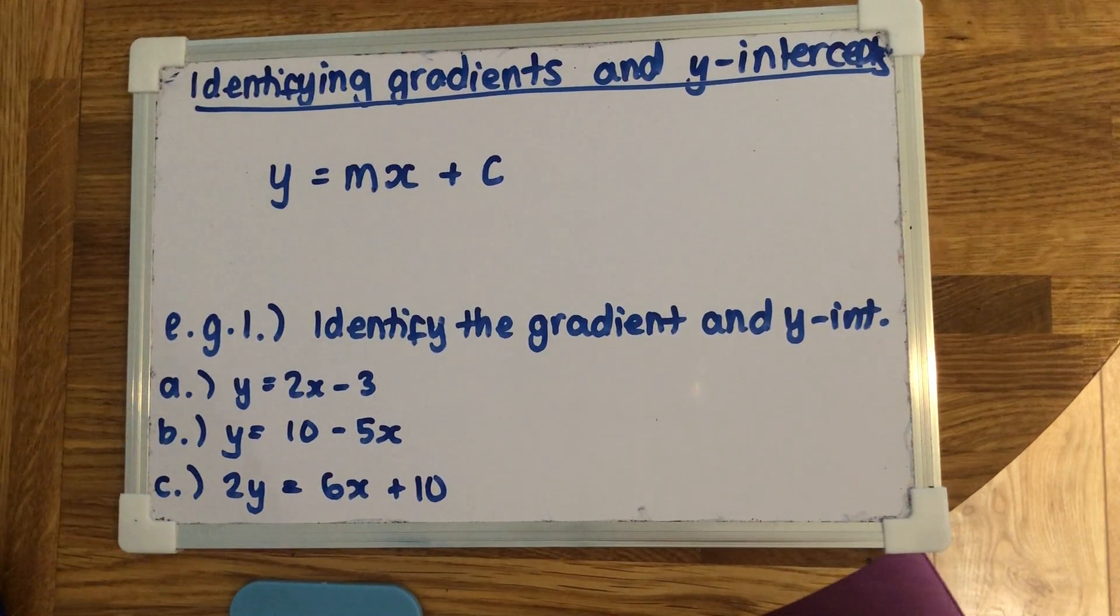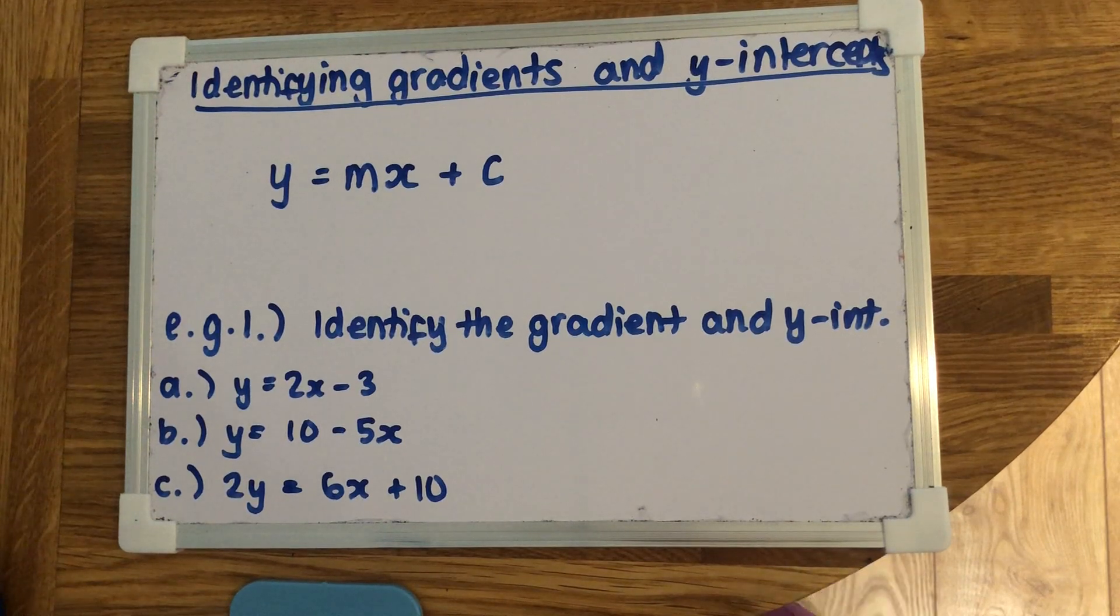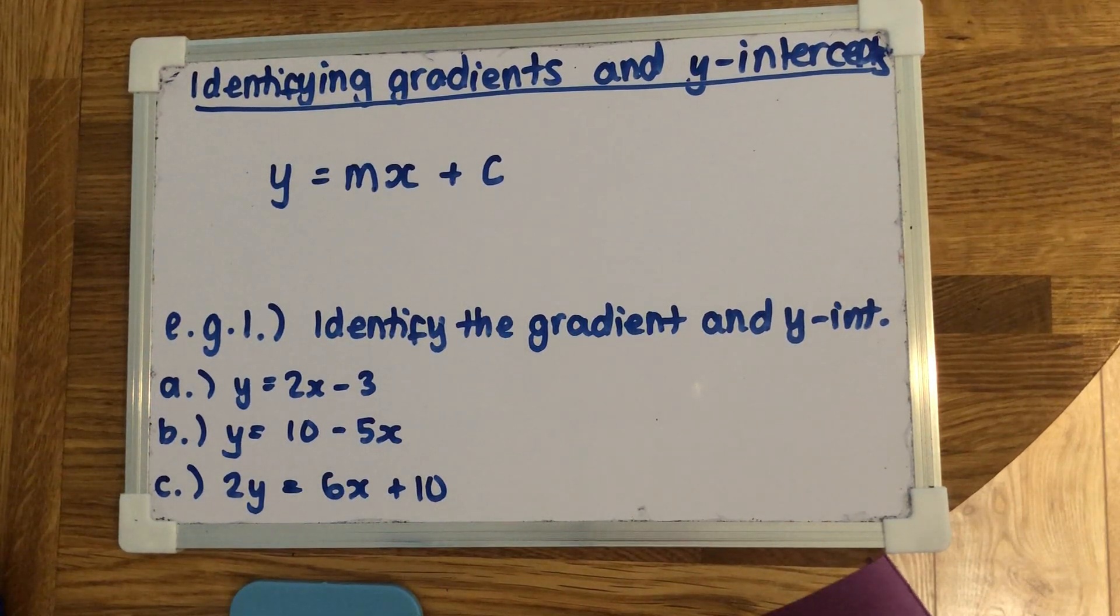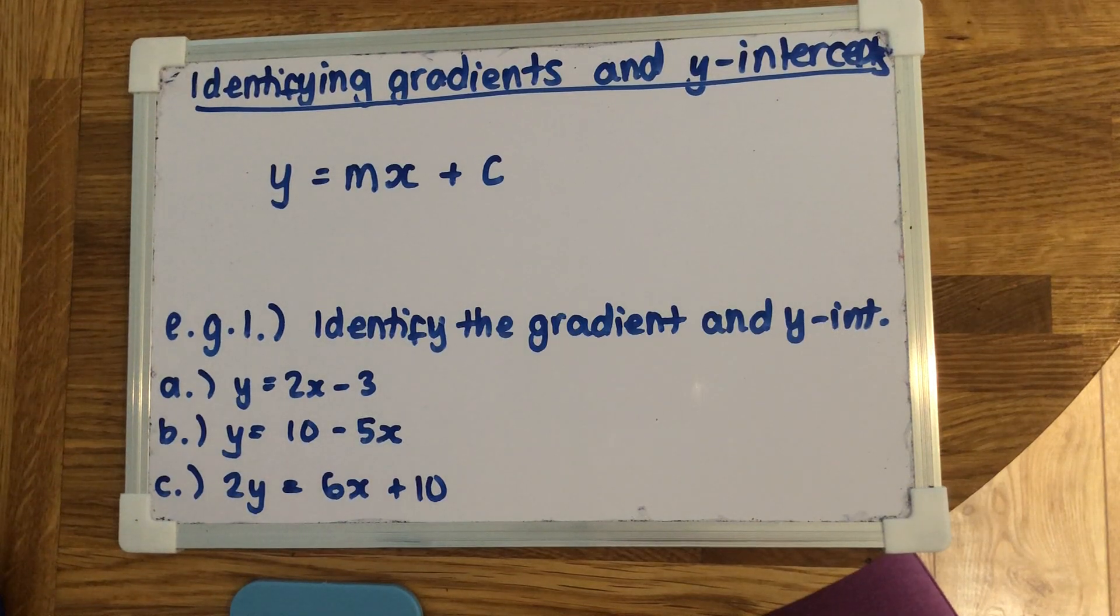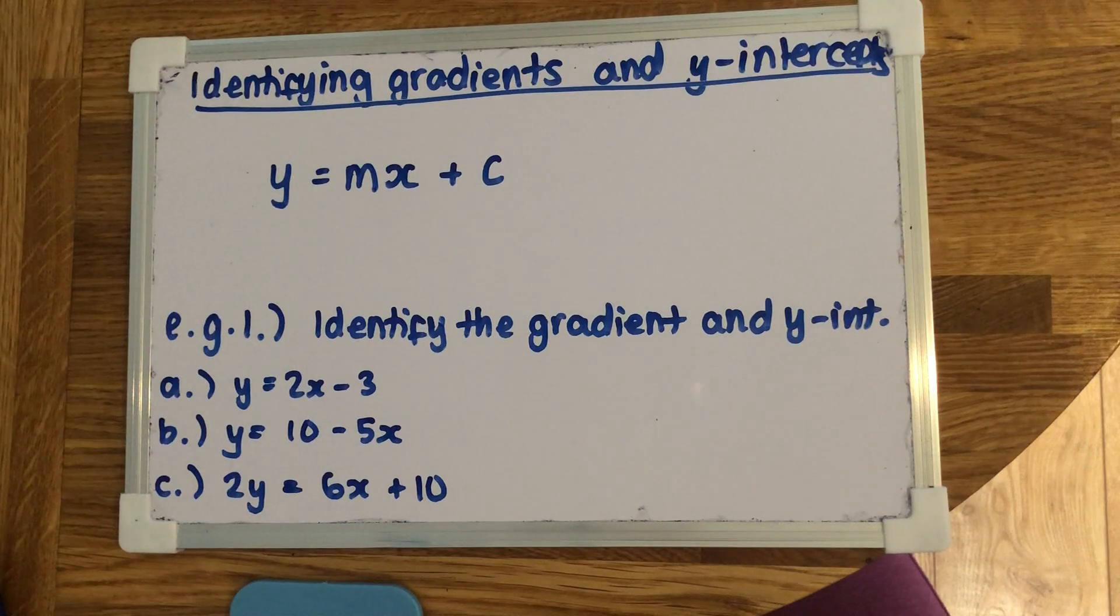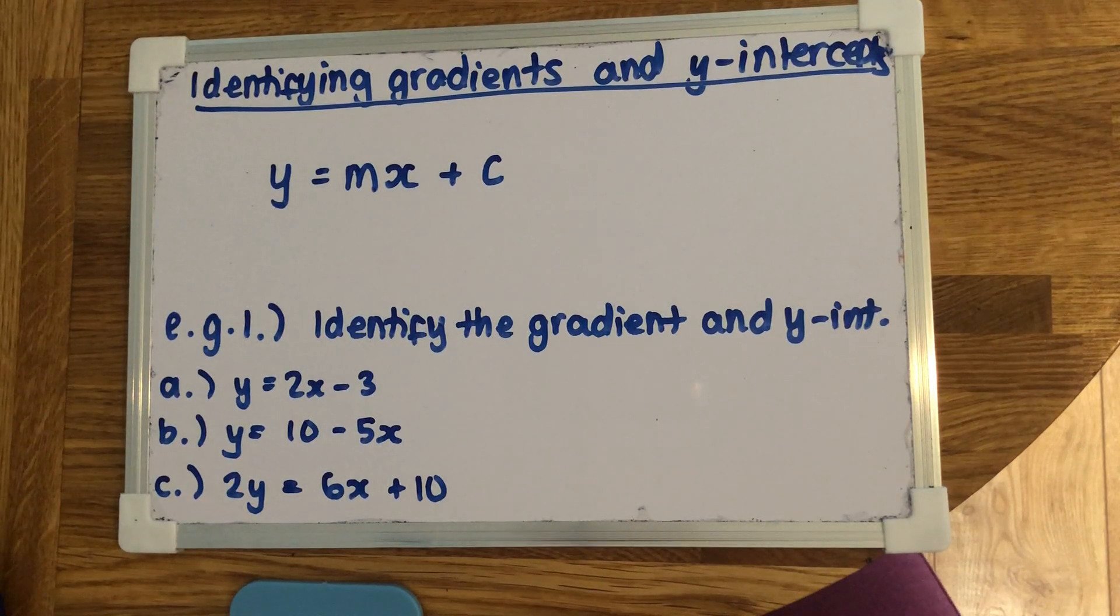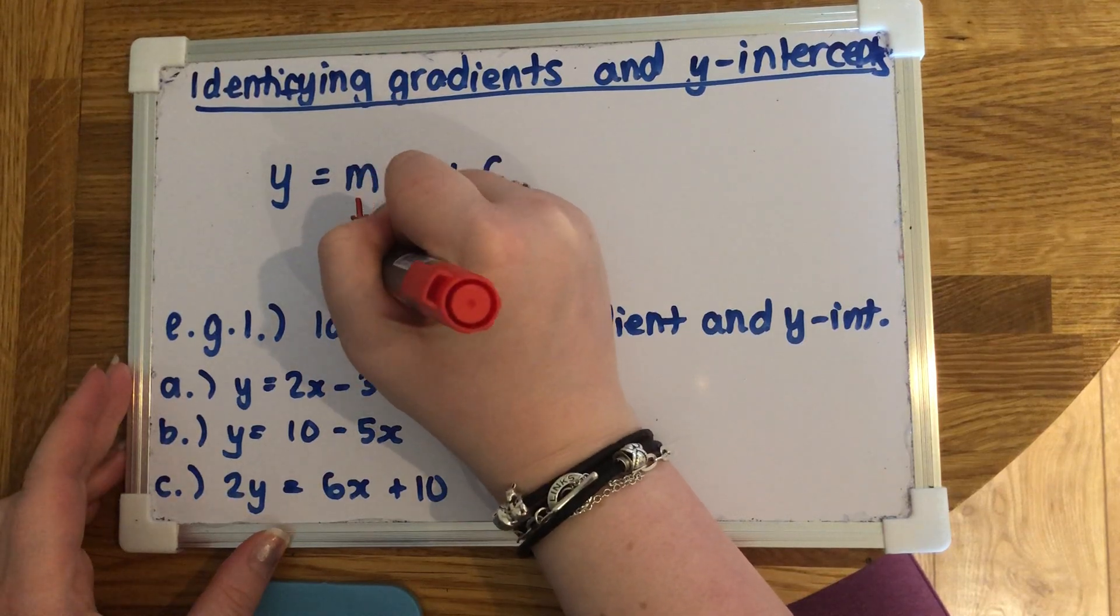Now sometimes they've been rearranged, they don't always look like this, but most of the time you're going to have to make it look like this to be able to answer the questions that we're going to be doing today. So the first thing is wondering what the m and the c stand for. Now the number in front of the x, which we call m, is the gradient.